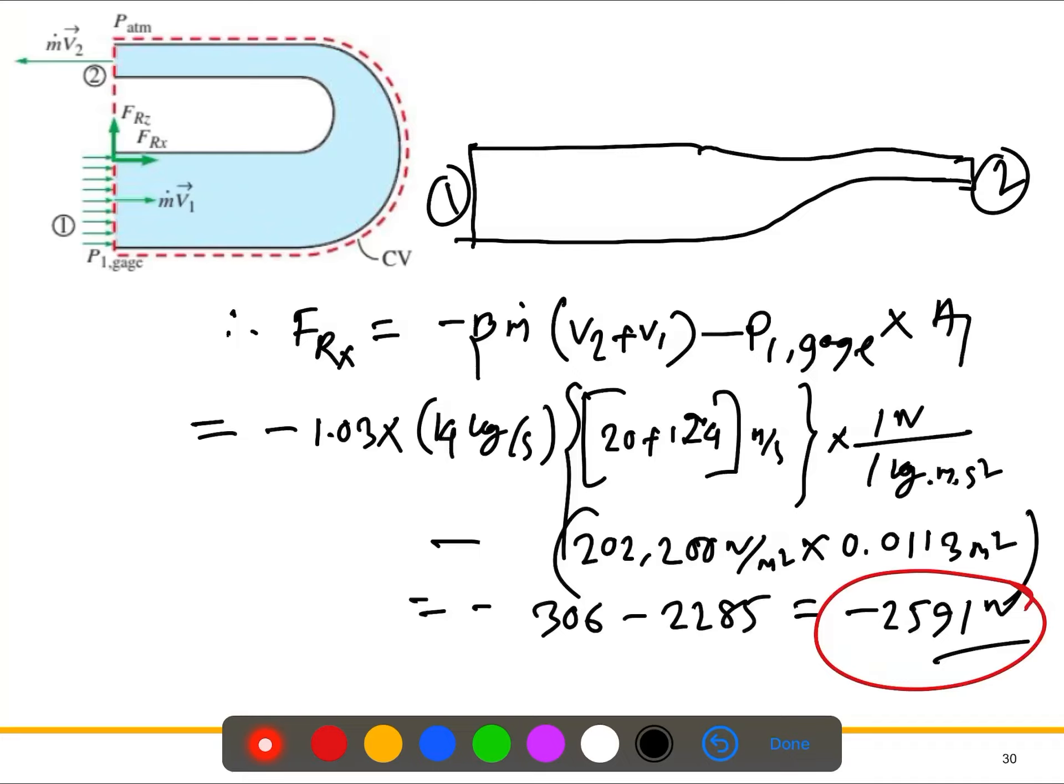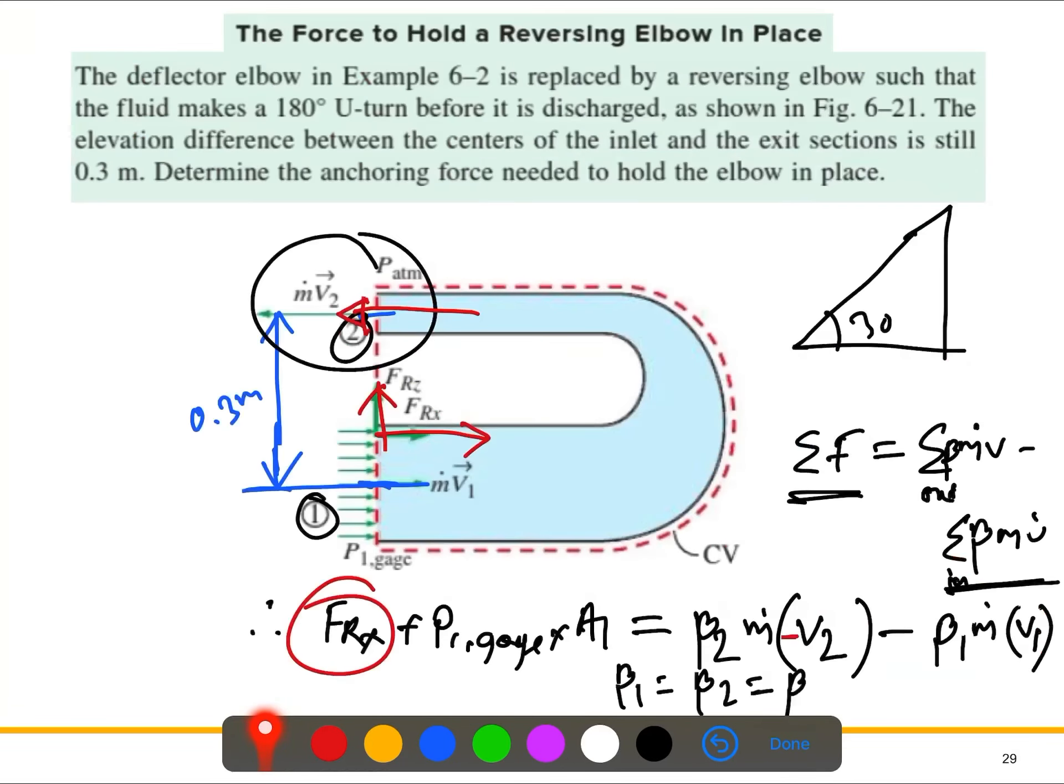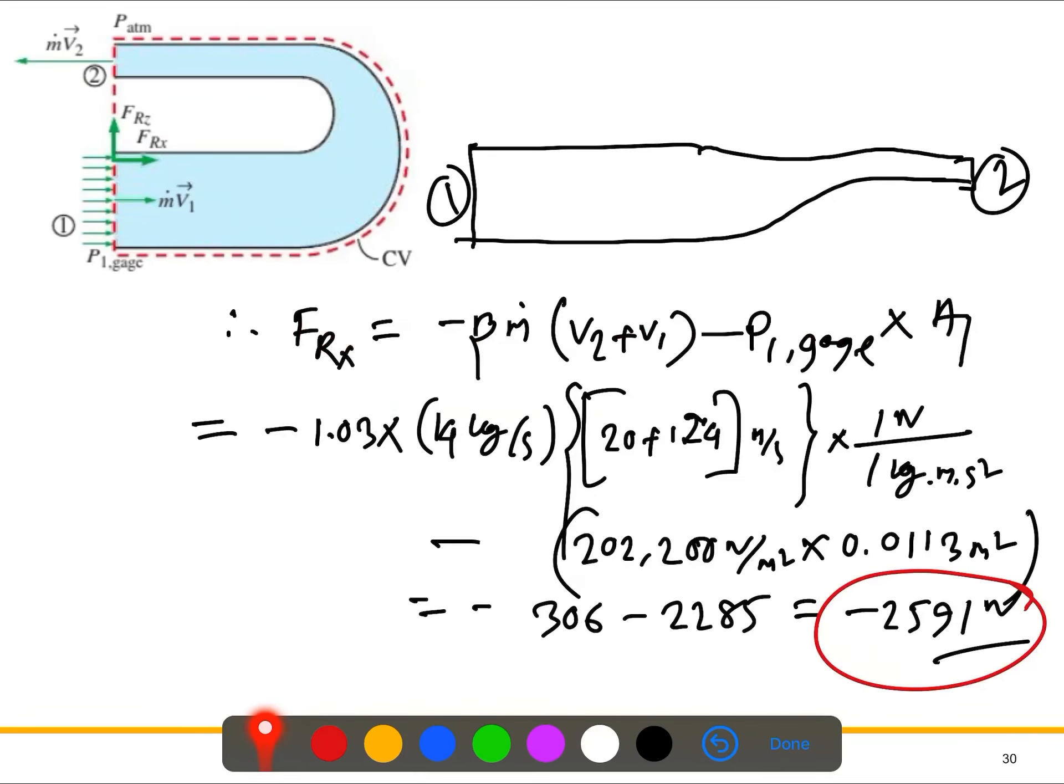Here, what we did, we already explained how we got these expressions. This is actually the momentum equations for steady flow processes. So we use these equations and we got it for the inlet and outlets, and then we simplified and we substituted all the values. Once we substituted all the values, we got the value negative, which means it's acting along the negative x direction. So that's it, and yeah, we'll discuss it during the lecture.